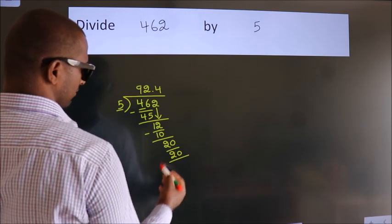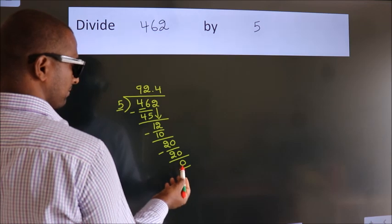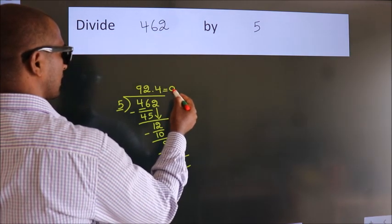Now we subtract. We get zero. We got remainder zero, so this is our quotient.